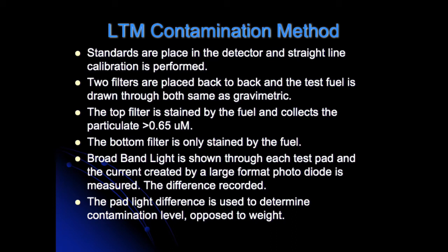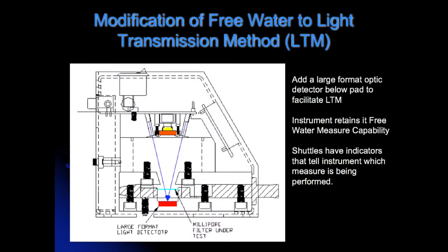The pad light difference is used to determine contamination level, as opposed to weight. Already employed in the field is the JFWA-1 Hydrolite, which is used for determining free water in aviation kerosene. We plan to modify the free water device to incorporate the light transmission method. To do this, all we have to do is add a large format optic detector blow pad to facilitate the light transmission method. The instrument retains its free water measurement capability. Shuttles have indicators that tell the instrument which method is being performed using magnetics. Due to the design of the JFWA-1 Hydrolite, it is a very easy modification to add the LTM capability within the existing frame of the unit.